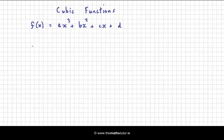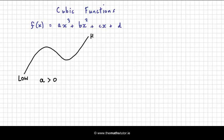The shape of a cubic function is typically like this: if the number before the x³ term is positive — so in this case a is greater than 0 — it starts off low and finishes high.